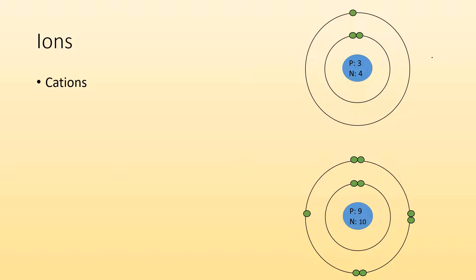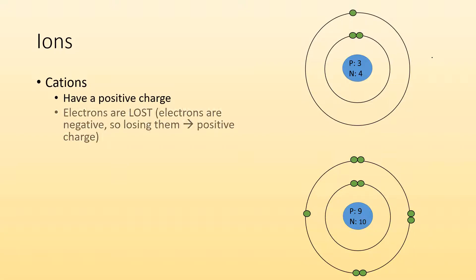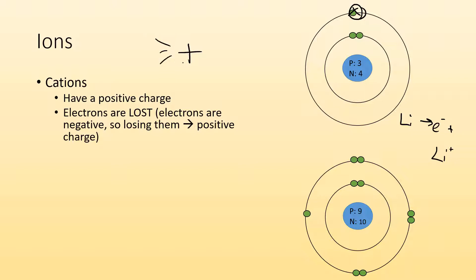Cations have a positive charge because they're losing electrons. In this example I have lithium and it's losing an electron. Its charge goes up — it becomes a cation with a positive charge. The way I remember cations is I draw a little cat. Cations are positive, and they tend to be metals — metals tend to lose electrons and become positive.